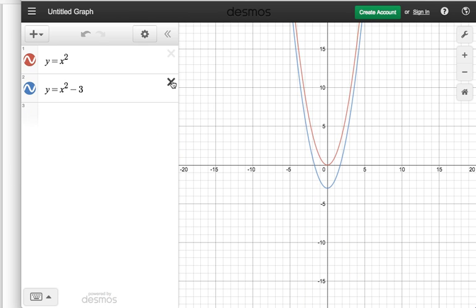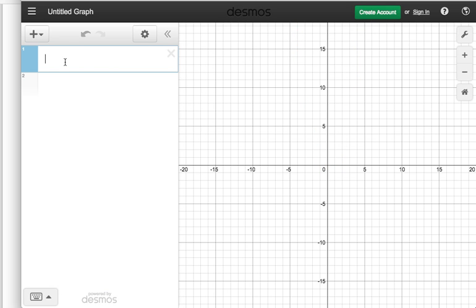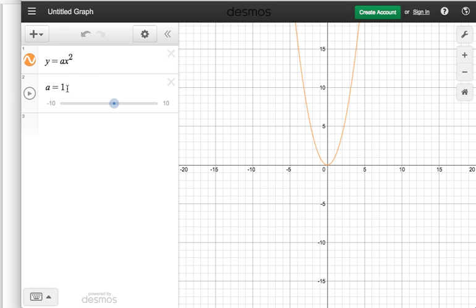Whatever coefficient is in front of X squared really determines whether it goes up or down. If it's going up, there's got to be a bottom point. If it goes down, there's got to be a minimum point. Let's just turn all these off for now. And here's my original parabola. Let's do AX squared, and it has a slider.